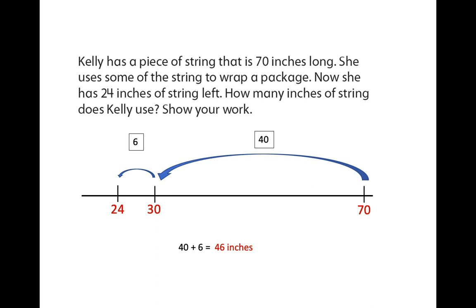Well, we can use an open number line. We can start all the way at the end with 70. We have to get back to 24. Well, I can go from 70 all the way back to 30. So 70 take away 40 is 30, but I'm not at 24 yet. So from 30 to 24 is 6. So 40 plus 6 is 46.